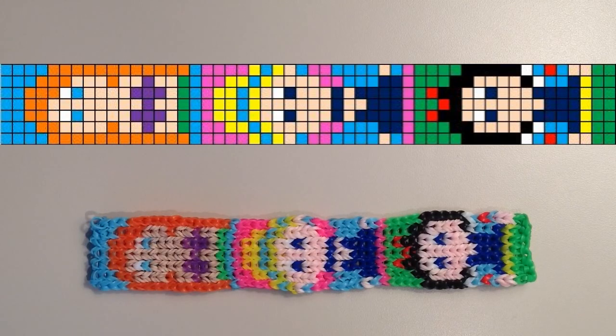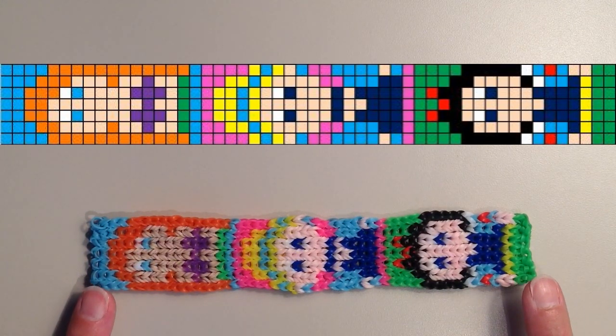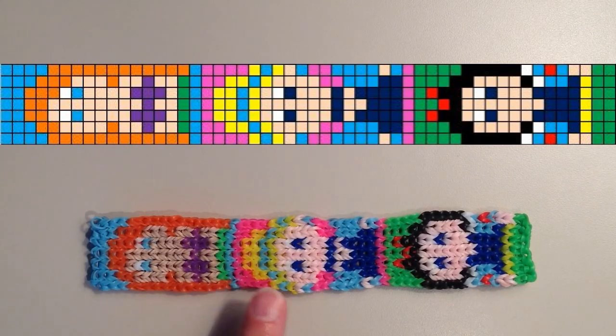And if you do happen to have the Alpha Loom, on the back of the instructions they include a grid template that you can use to approximate the size you need for your wrist. And if you do need to add or subtract rows, you can do that on the ends. There's two rows on either end, and then there's also two rows in between the characters.